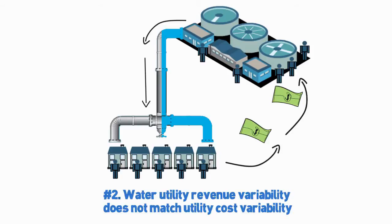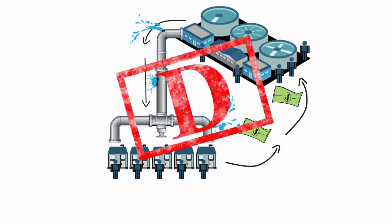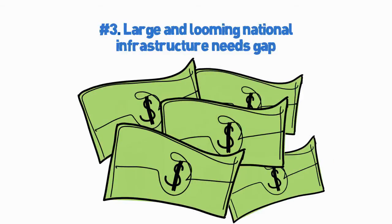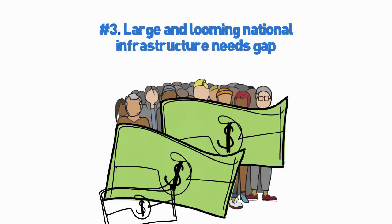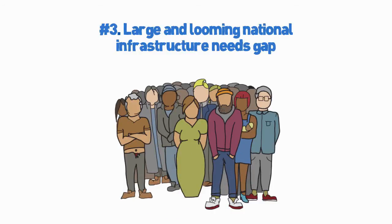These two issues alone would create a financial challenge for utilities in the best of circumstances. Unfortunately, the industry is not facing the best of circumstances. The American Society of Civil Engineers gave the nation's drinking water and wastewater infrastructure a grade of D — passing, but barely. Much of the current infrastructure, which was installed decades ago, will need to be rehabilitated or replaced in the very near future. The American Water Works Association and the U.S. Environmental Protection Agency agree that there is a large and looming national infrastructure needs gap. The amount of subsidized funding available will not cover it. Utilities will have to generate even more revenues to pay for this upcoming wave of infrastructure reinvestment, most likely coming from increased rates. Remember that downward spiral? Covering these needs may speed that up.